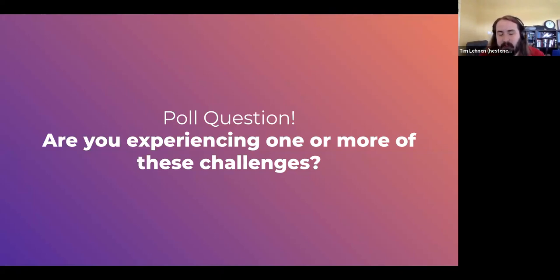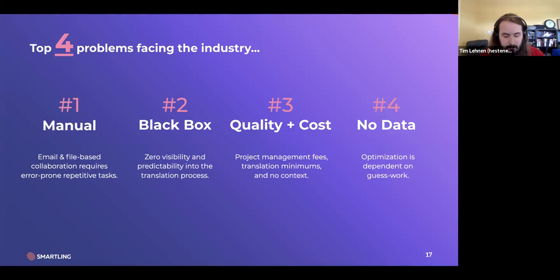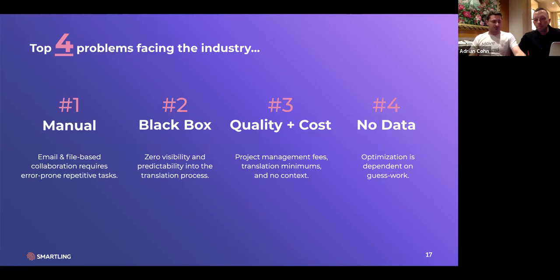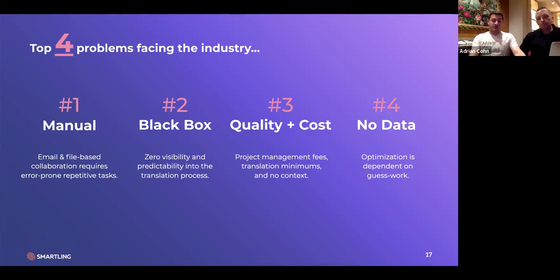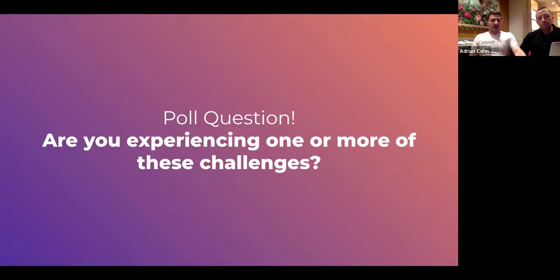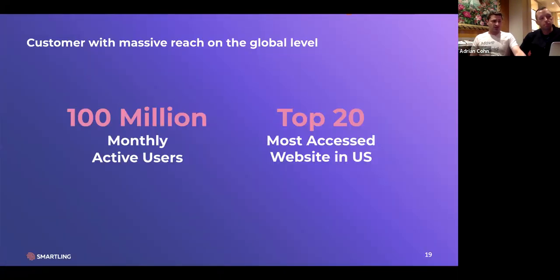For these challenges, if you can use the chat and talk about whether you have issues with these four categories — manual process, lack of visibility, difficulty managing quality and cost, and lack of analytics — that would be helpful. The main driver we typically see in webinars with developers is that number one, manual process. Translation quality from Google is also a common concern. If you haven't started yet, it's good to know these problems early.